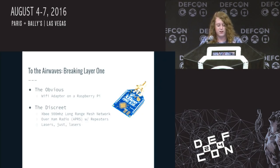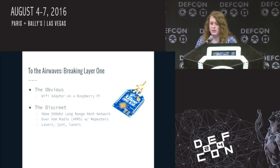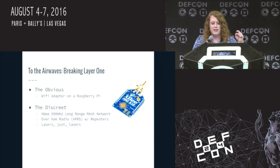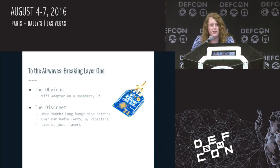The XBee radios that I have are like 28-mile range, they do mesh. The cool thing is you could build a mesh network that went all the way up the strip, and the chances of anyone being able to triangulate each and every node by the time you were done exfilling data is extremely low. These things cost like 70 bucks for the series I'm using — you can get one-mile-range ones for about 40. They're kind of like throwaway pen test devices. Just strap it to the back of a Teensy, plug it in, walk away.